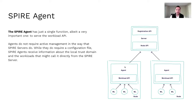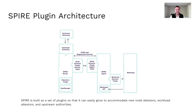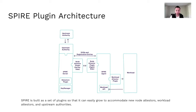The SPIRE agent serves an important function: to expose the workload API to workloads. There is no active management required to operationalize agents — they require a config file that tells the agent what trust domain it's part of and what workloads can call to get identities. The entire architecture for both server and agent is based on plugins: upstream authority, node attester plugins, node resolvers, data store plugins, key managers for disk or in memory, and the workload attester plugin. These are fully extensible. Refer to the official documentation on spiffe.io to learn more.